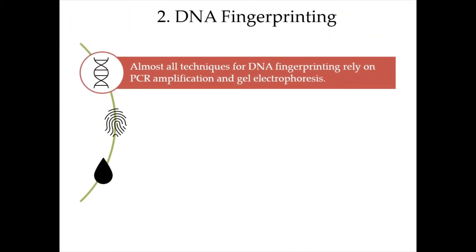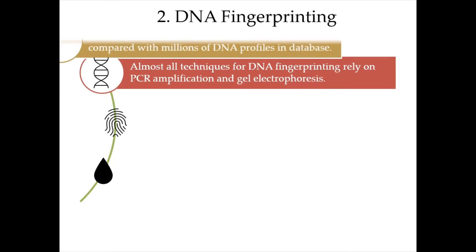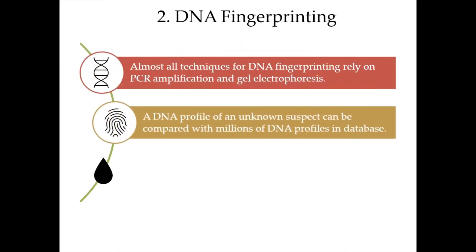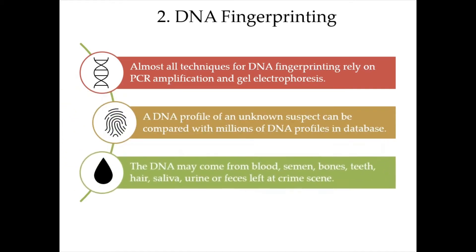Almost all techniques for DNA fingerprinting rely on PCR amplification and gel electrophoresis, which will be discussed later in this chapter. A DNA profile of an unknown suspect can be compared with millions of DNA profiles in a database. The DNA may come from blood, semen, bones, teeth, hair, saliva, or urine left at the crime scene.